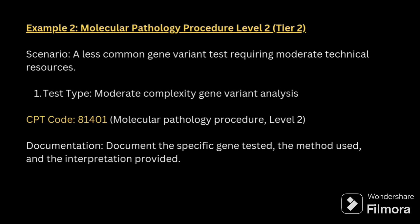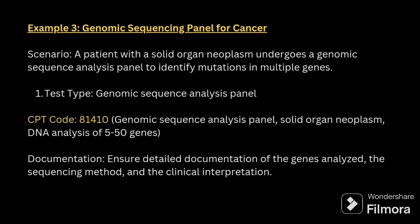Molecular pathology level 2 example: a less common gene variant test requiring moderate technical resources — less common is the keyword — so you assign 81401. Third example: genomic sequencing panel for cancer. A patient with solid organ neoplasm undergoes a genomic sequencing analysis panel to identify mutations in multiple genes, so the code will be 81410.